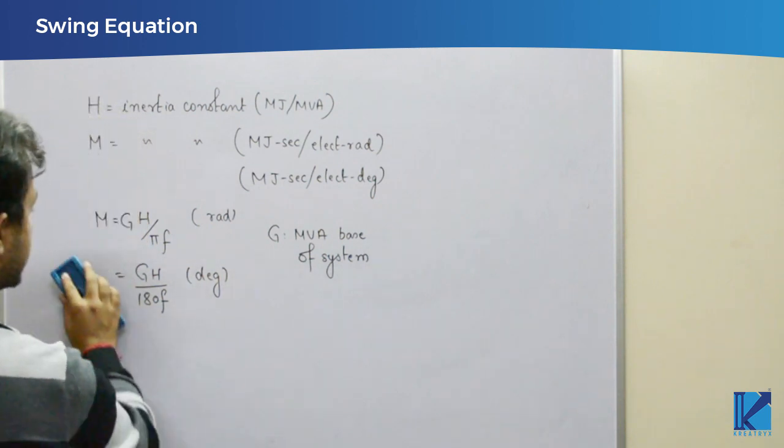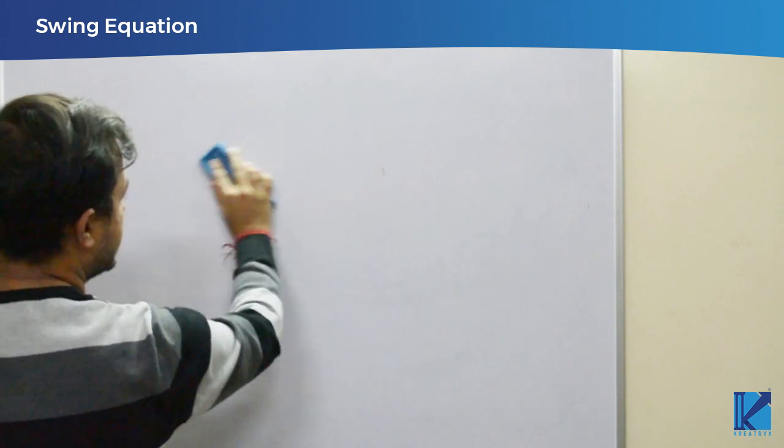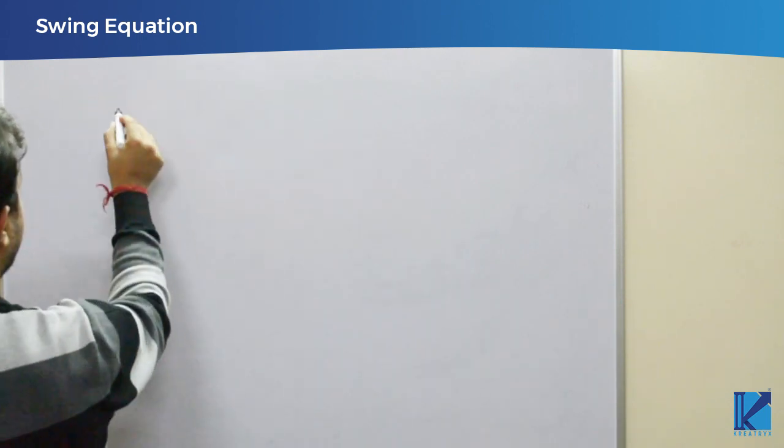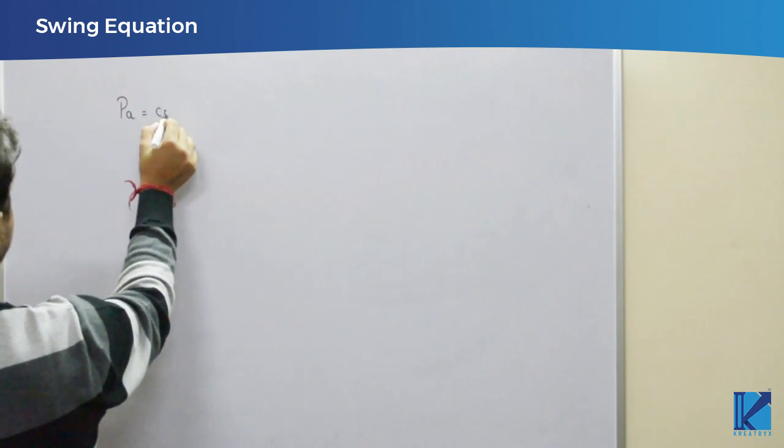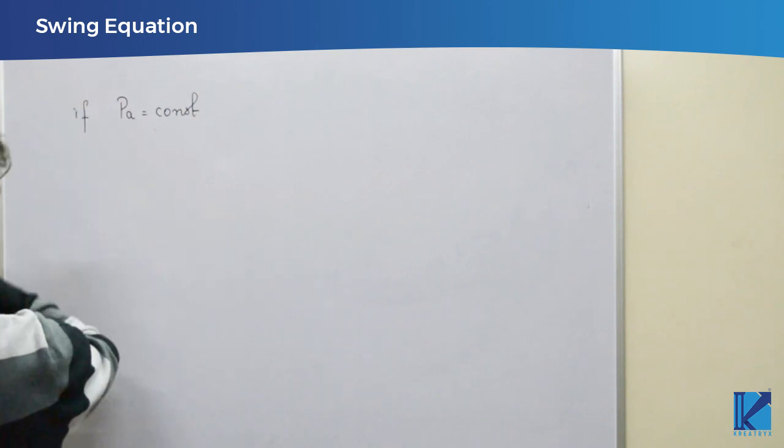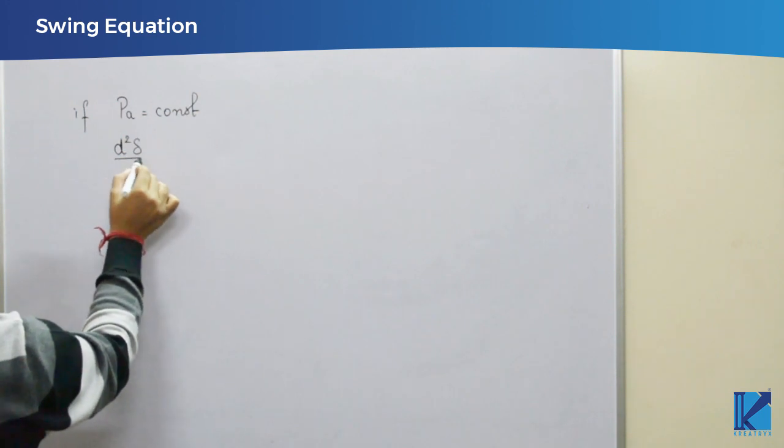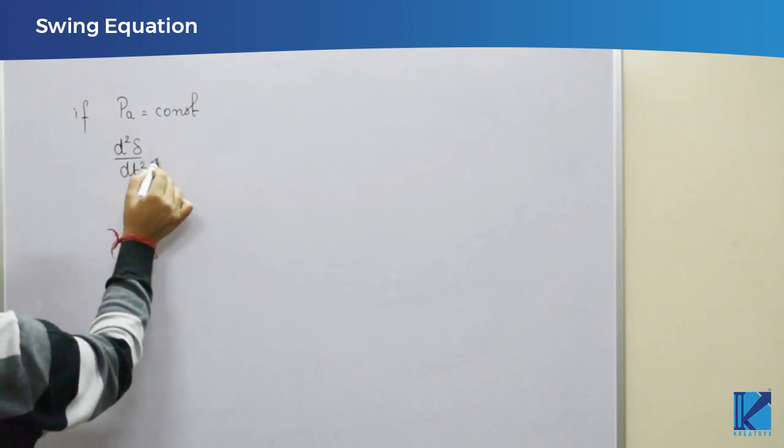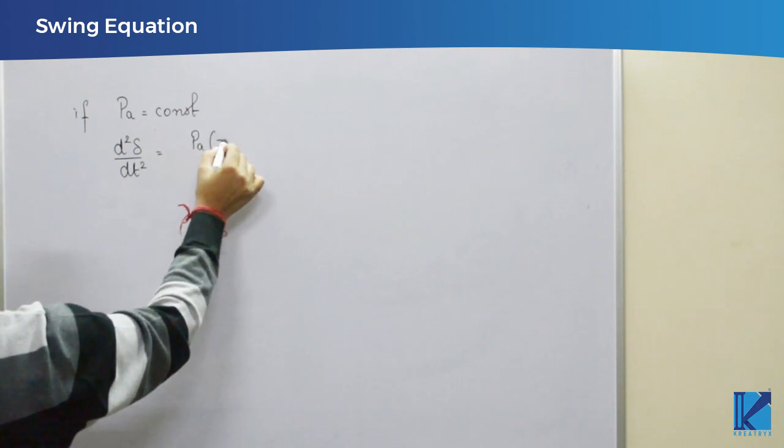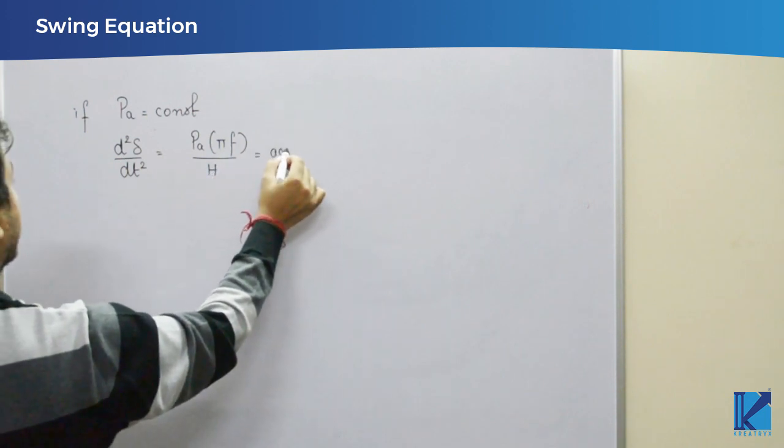Now, how to use this swing equation? See, most of the times what happens, if this accelerating power Pa is constant, then this d square delta by dt square by use of swing equation will be Pa into pi f by H. That is basically your acceleration.